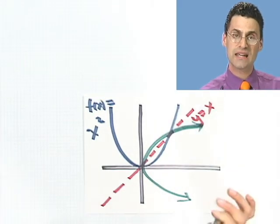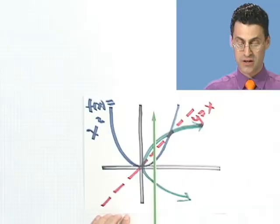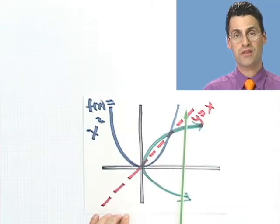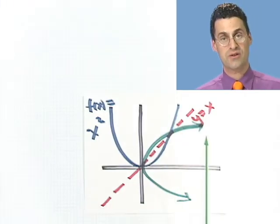Now, is that inverse really a function? Well, notice, no, it's not. It fails the vertical line test. The green fails the vertical line test. So, in fact, this does not have an inverse. And now you can see where the horizontal line test comes from.